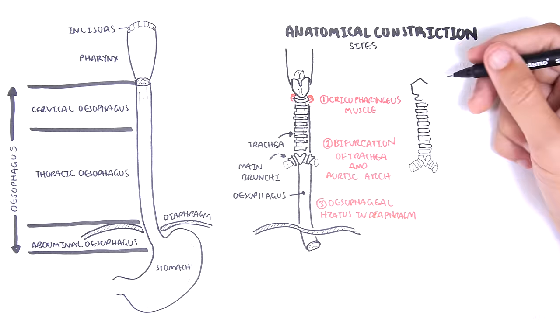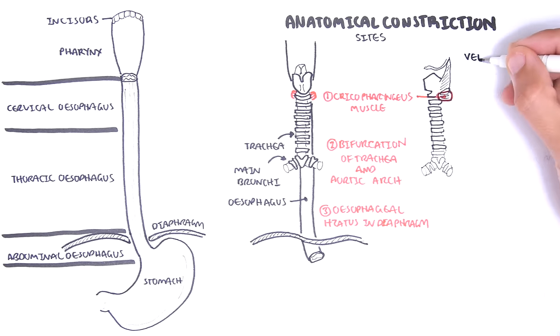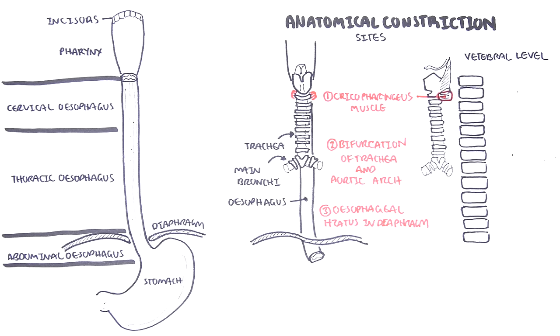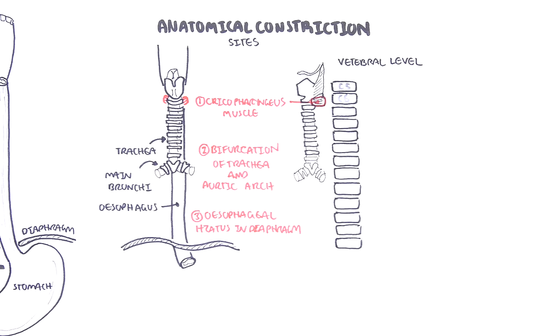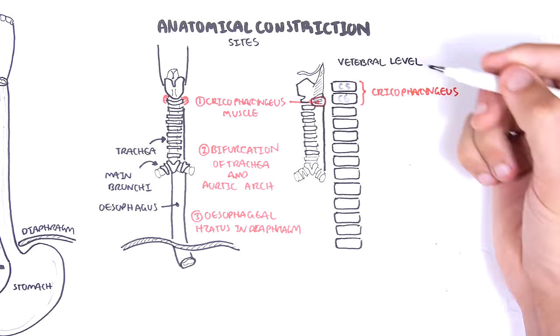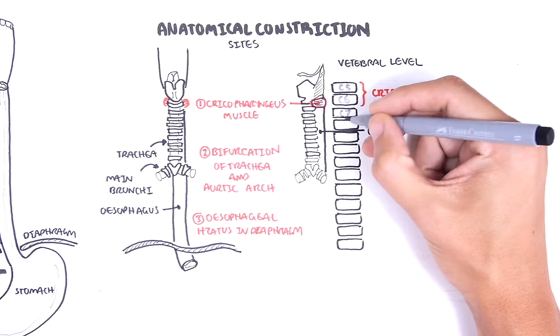If we look at these sites from a lateral view, the cricopharyngeus muscle is attached to the trachea and wraps around the esophagus, located around the C5, C6 vertebral level. The esophagus runs behind the respiratory tract.